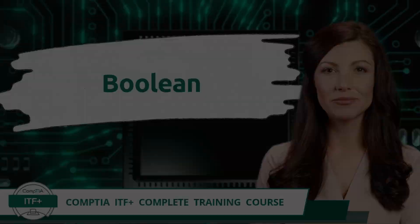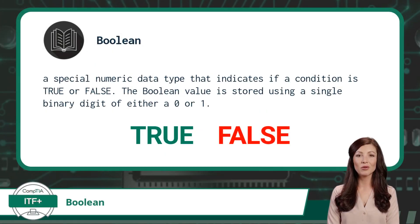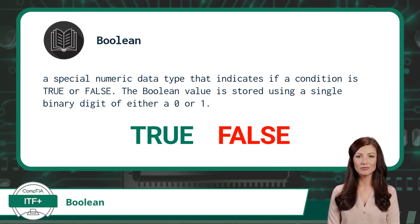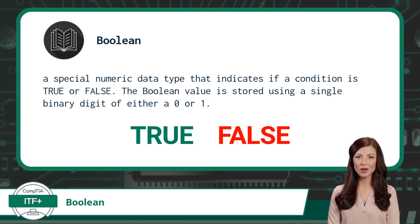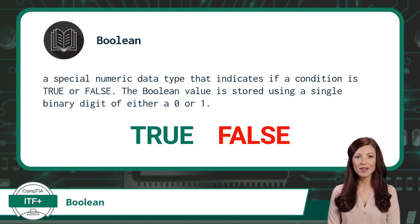Boolean. Boolean is a special numeric data type that indicates if a condition is true or false. The Boolean value is stored using a single binary digit of either a 0 or 1. Keep on the lookout for the words true and false, or any scenario where only two options exist — these are great signifiers that you are working with the Boolean data type.